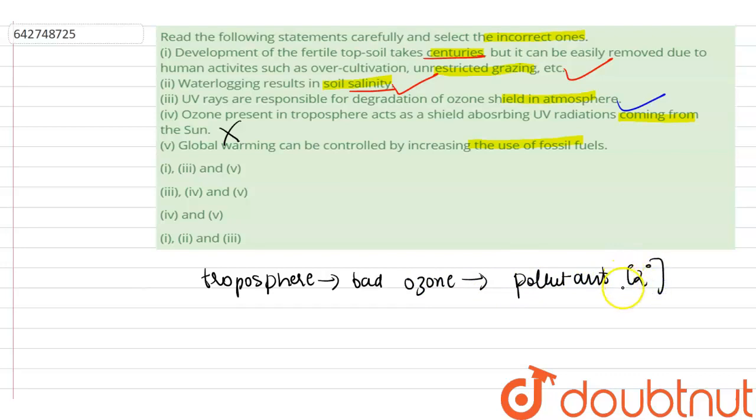So it does not act as a shield absorbing UV radiations coming from the sun, whereas the ozone which is present in the stratosphere, which is in the upper part of the atmosphere, is good ozone. It acts as a shield absorbing UV radiations or UV rays. That is why this statement is incorrect.